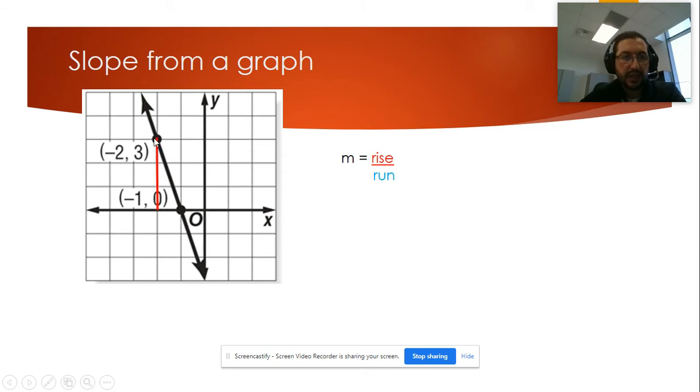In this case, I'm going to move down. How many units? Three. And I'm going to move one unit to the right. So my rise will be negative three units because I'm moving down, and my run will be one unit positive because I'm moving to the right.